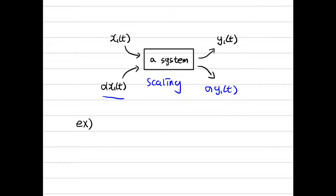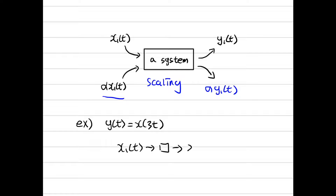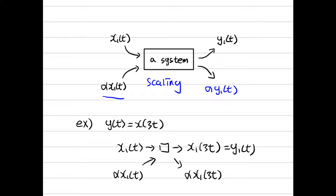Let me give you an example. If the system output is given by y(t) equals x(3t), which means when the input signal is x1(t), then the output signal is x1(t), and this is y1(t). If scaled input alpha*x1(t) enters this system, it will give the output alpha*x1(t), which is the same as alpha*y1(t). So, this is a scaling system.